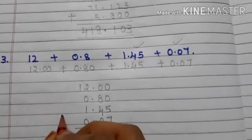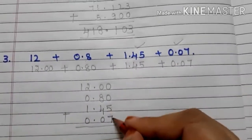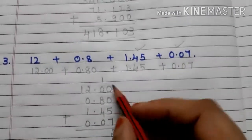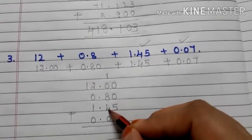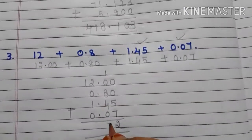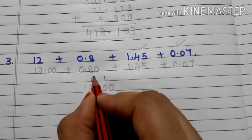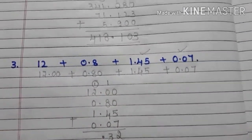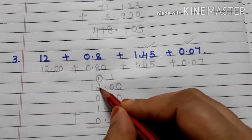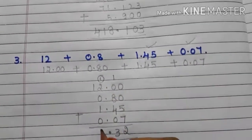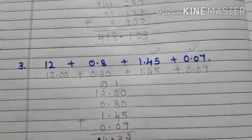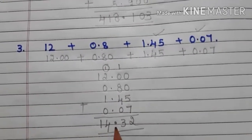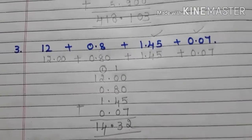Arrange: 12.00, 0.80, 1.45, 0.07. Now add: 0 plus 0 plus 5 plus 7 is 12, write 2 carry 1. 1 plus 8 is 9, 9 plus 4 is 13, write 3 carry 1. Decimal under decimal. 1 plus 2 is 3, 3 plus 1 is 4. So the answer is 14.32.